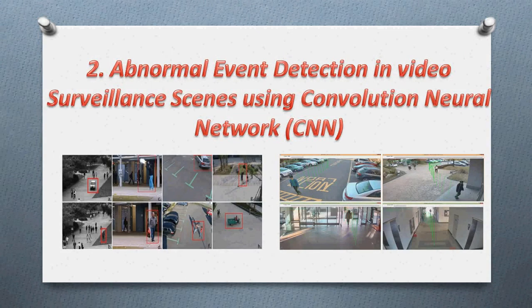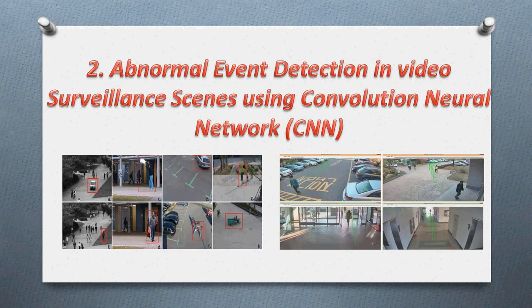The second project is abnormal event detection in video surveillance. Nowadays, CCTV cameras and real-time video surveillance systems are common. Currently, when a crime such as robbery, murder, or chain snatching happens, the police department uses the recorded video only for post-investigation.